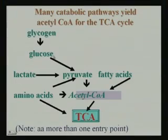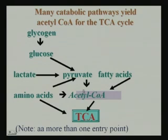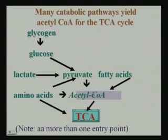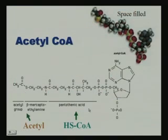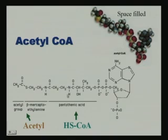Pyruvic acid can be produced from glycogen to glucose to pyruvate, from lactate to pyruvate, from fatty acids, or from amino acids. Fatty acids can also give acetyl-CoA directly. Acetyl-CoA has one acetyl group to which the CoA structure is attached — that is the structure of acetyl-CoA.